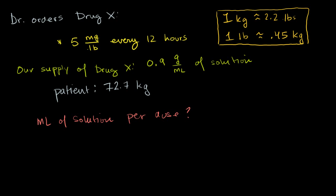So the first thing, let's figure out our dosage in terms of per kilogram. This is per pound, and we really don't need to know every 12 hours, because they're saying how many milliliters of solution do we do per dose? A dose is every 12 hours. So every 12 hours is kind of extra information. So we want to figure out this 5 milligrams per pound, how do we convert that to how many milligrams per kilogram? So let's do 5, I'll write it down here in magenta, 5 milligrams per pound.